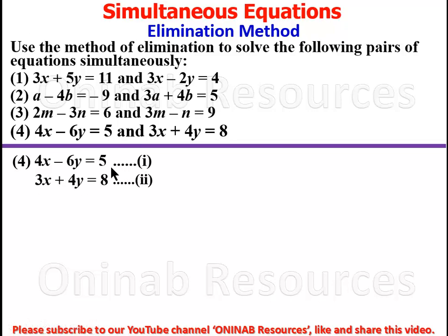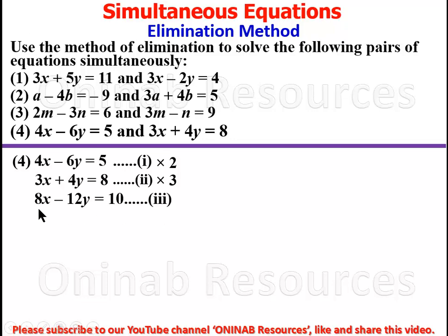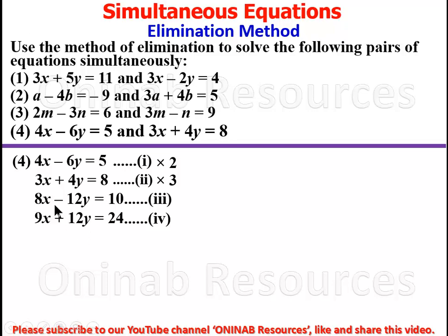We multiply equation 1 by 2 to get 8x minus 12y equal to 10 — call it equation 3. We multiply equation 2 by 3 to get 9x plus 12y equal to 24 — call it equation 4. Now the coefficients of y in equations 3 and 4 are the same magnitude.